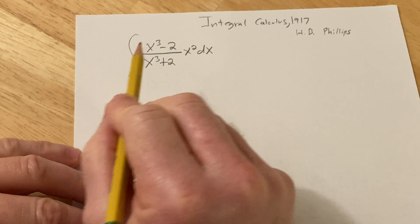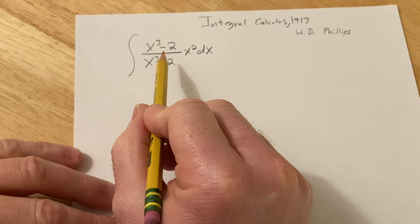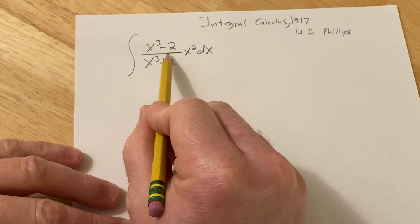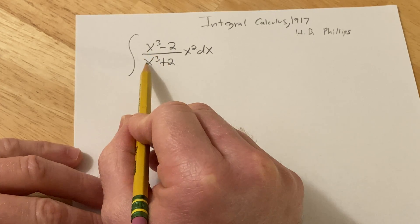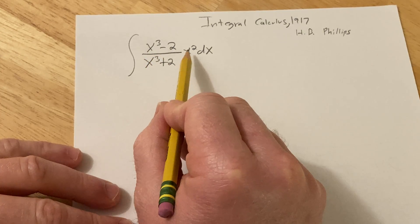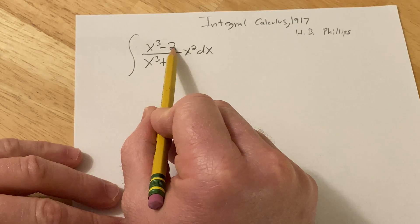So when you first see this, the obvious thing you want to do is let u be x cubed plus 2. When you do that you're going to get a 3x squared dx and here you have an x squared. But the problem is up here.